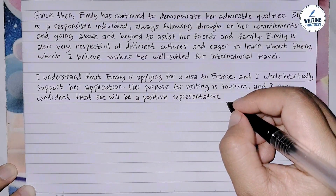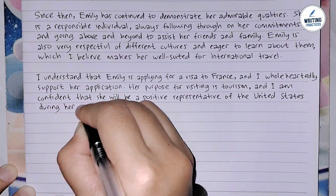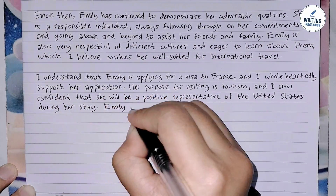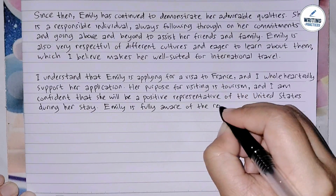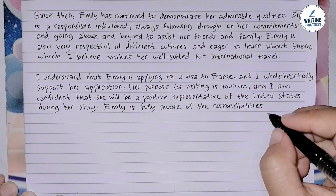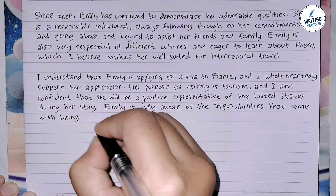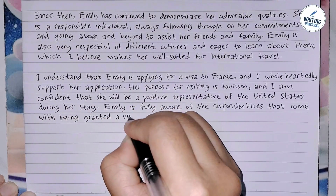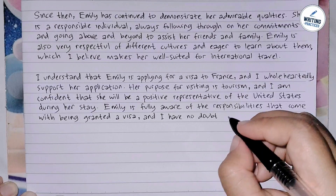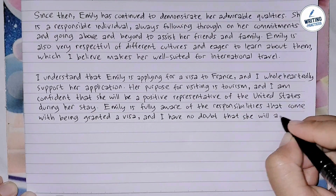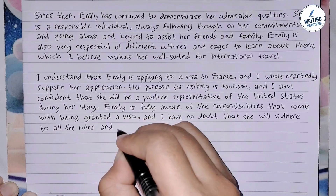Here is an example of how you write the fourth paragraph: 'I understand that Emily is applying for a visa to France, and I wholeheartedly support her application. Her purpose for visiting is tourism, and I am confident that she will be a positive representative of the United States during her stay. Emily is fully aware of the responsibilities that come with being granted a visa, and I have no doubt that she will adhere to all the rules and regulations set forth by France.'